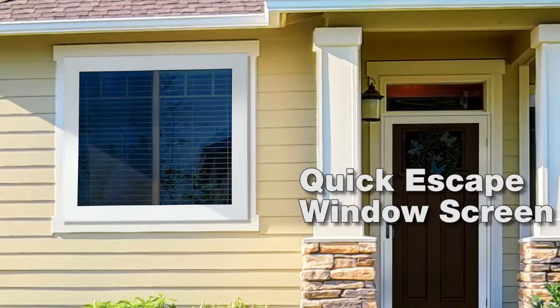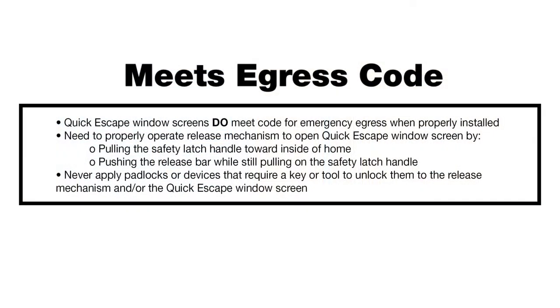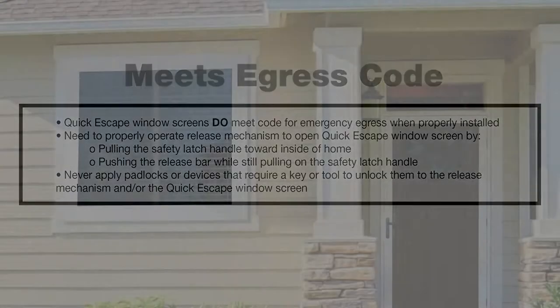Quick escape window screens are operable window screens that open quickly from the inside to allow for emergency exit. They are surface mounted only. This type of window screen does meet typical codes for emergency egress, and a secondary safety handle can be added at the time of order to enhance child safety.